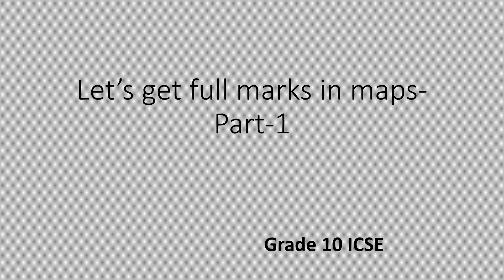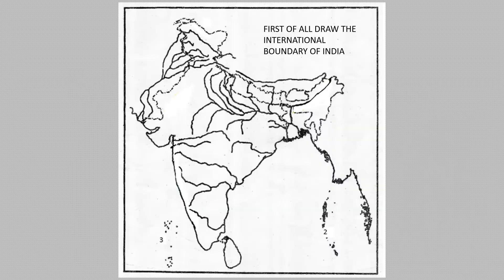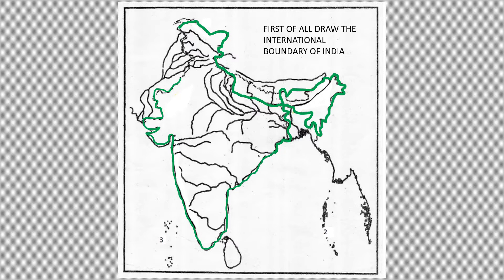Let's get full marks in maps. It's really not difficult. It has three parts. This is part one. First of all, you draw the international boundary line of India. Here is the international boundary line.